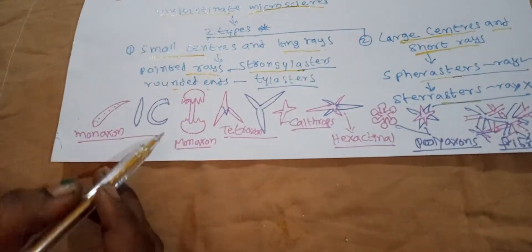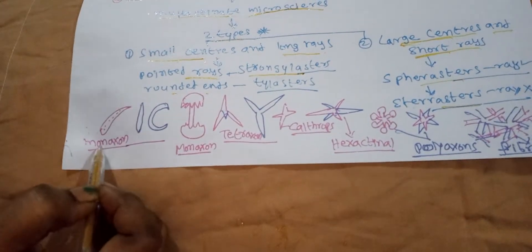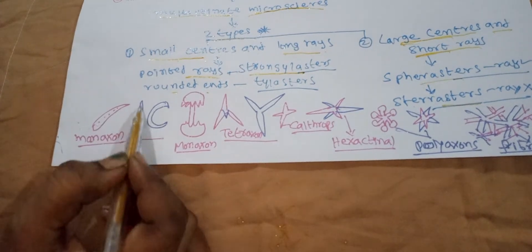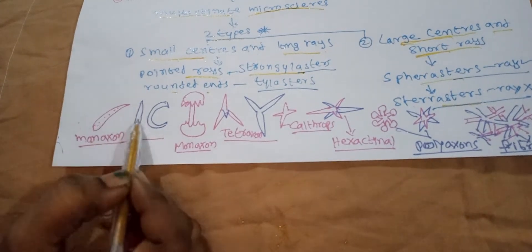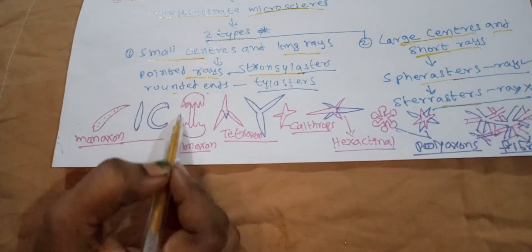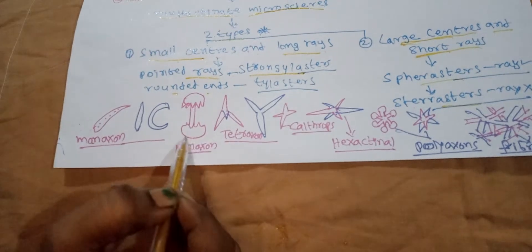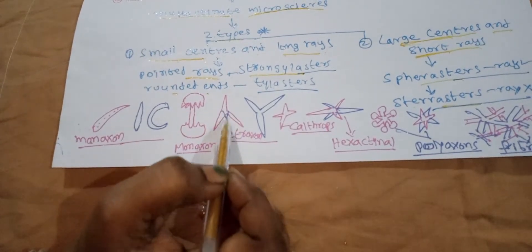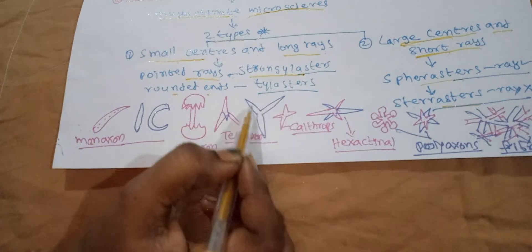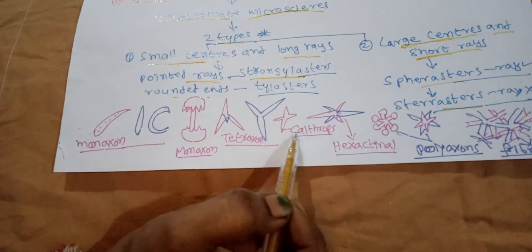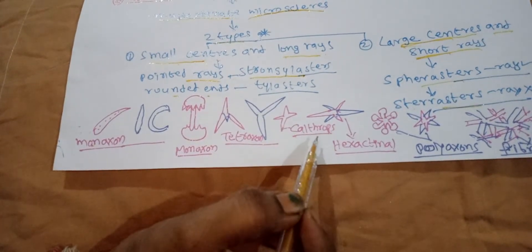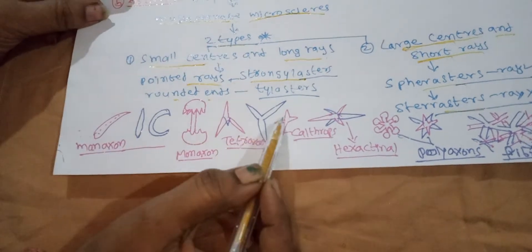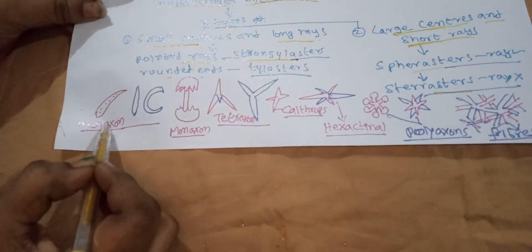Looking at the diagram: you can see monaxon, C-shaped, biaxon, amphidisc-shaped, monaxon, tetraxon spicules. Next, triaxon, tetraxon, and monaxon types are shown.